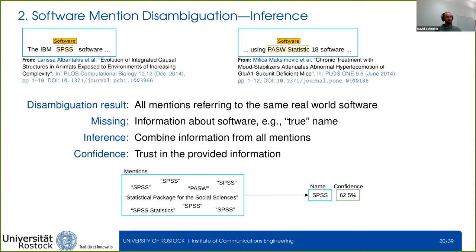In the example, we would choose SPSS as the name because it's the most common one, assigning a confidence of 62.5%. We do this not only for the name, but also for the software type, the developer, and all other information we think is interesting. This basically covers the entire extraction pipeline: entity recognition, relation extraction, and finally the disambiguation step.